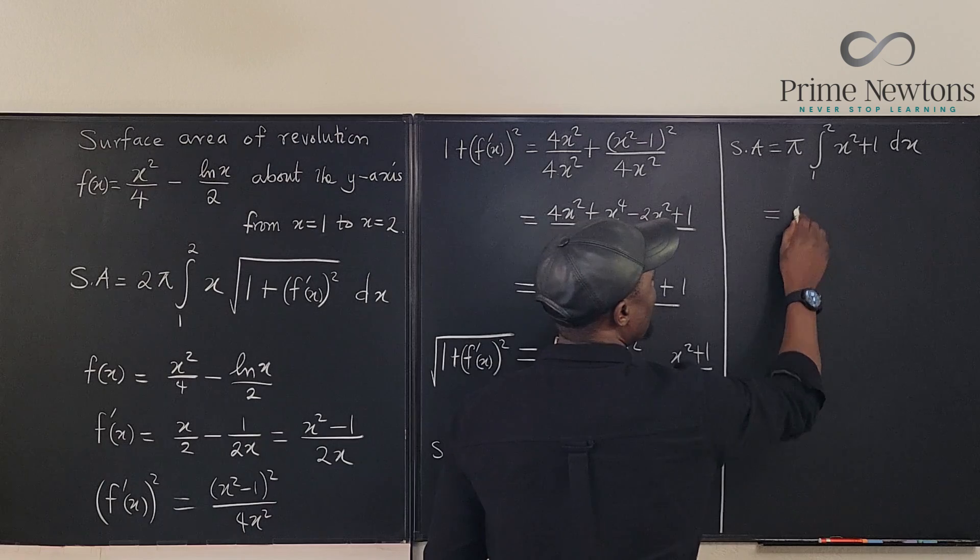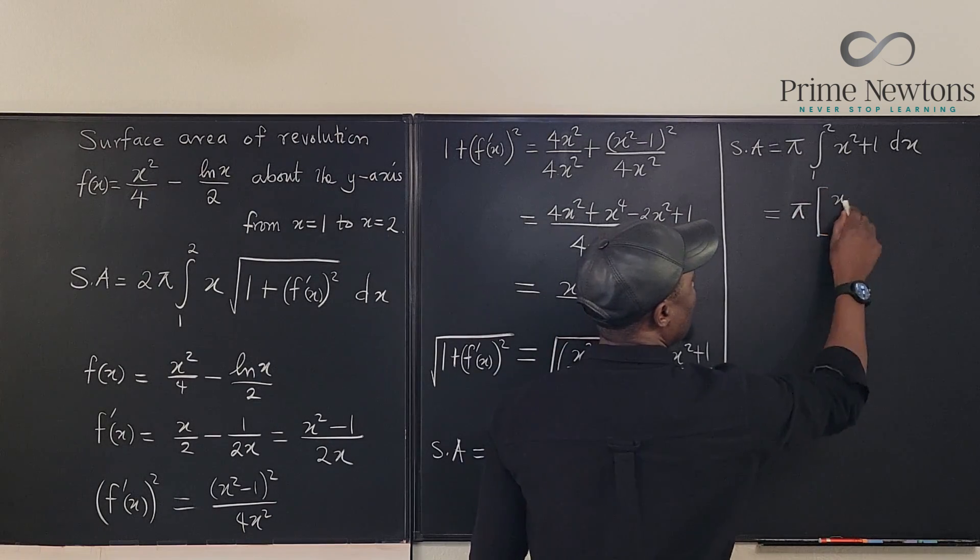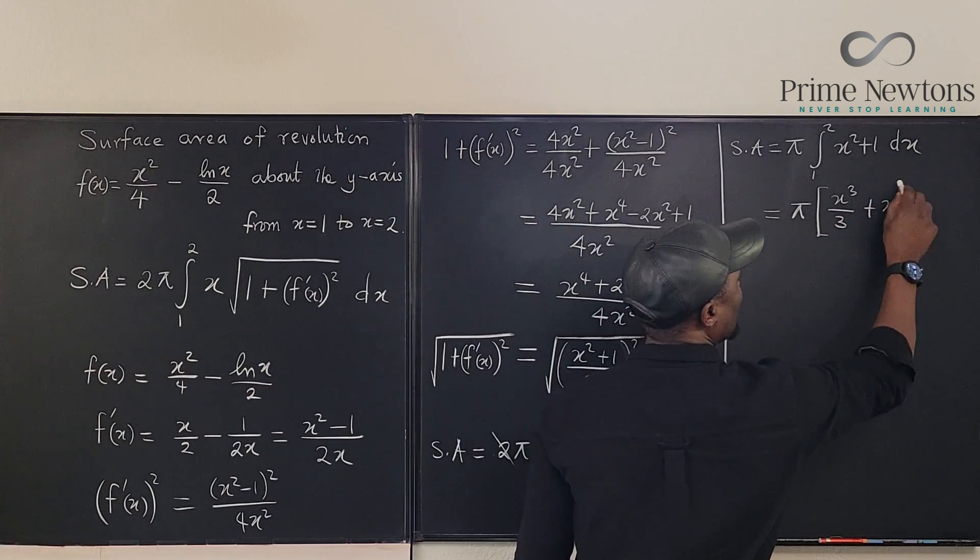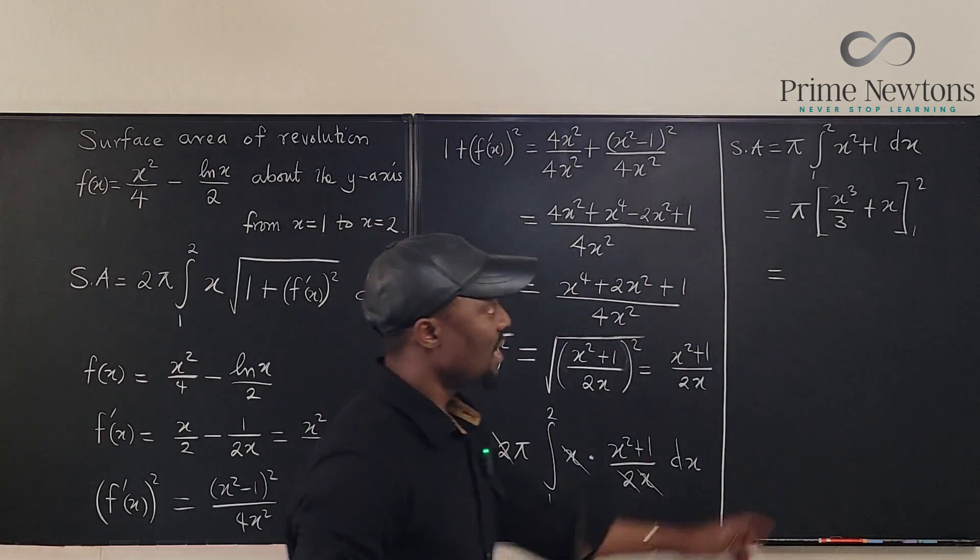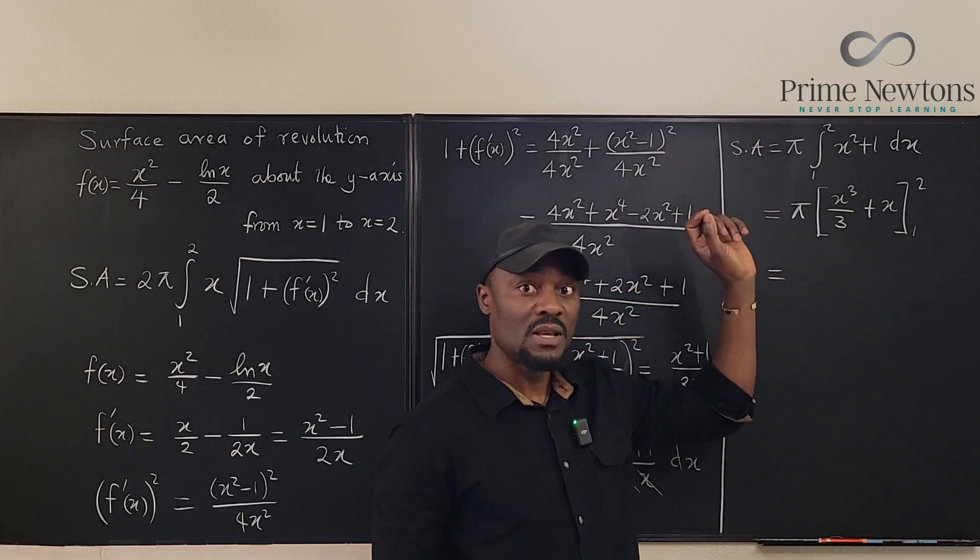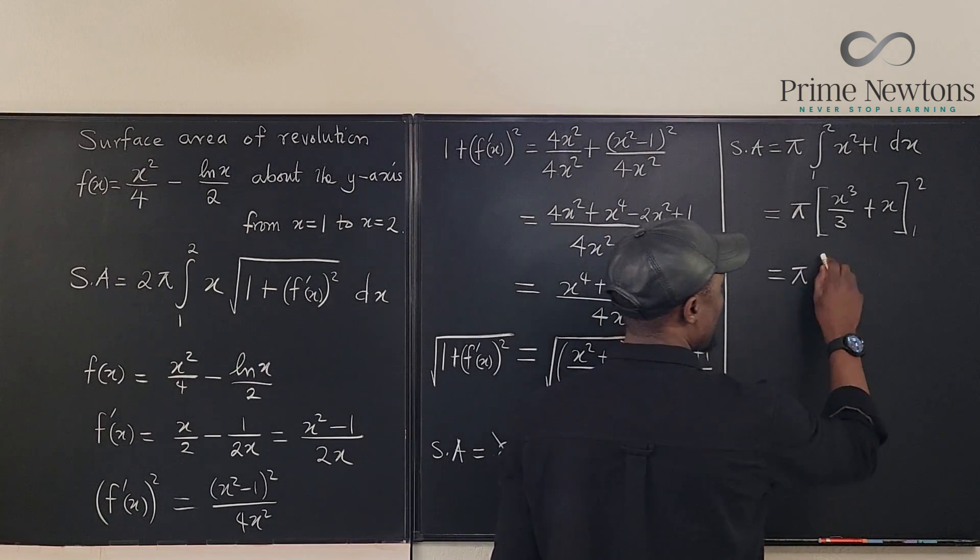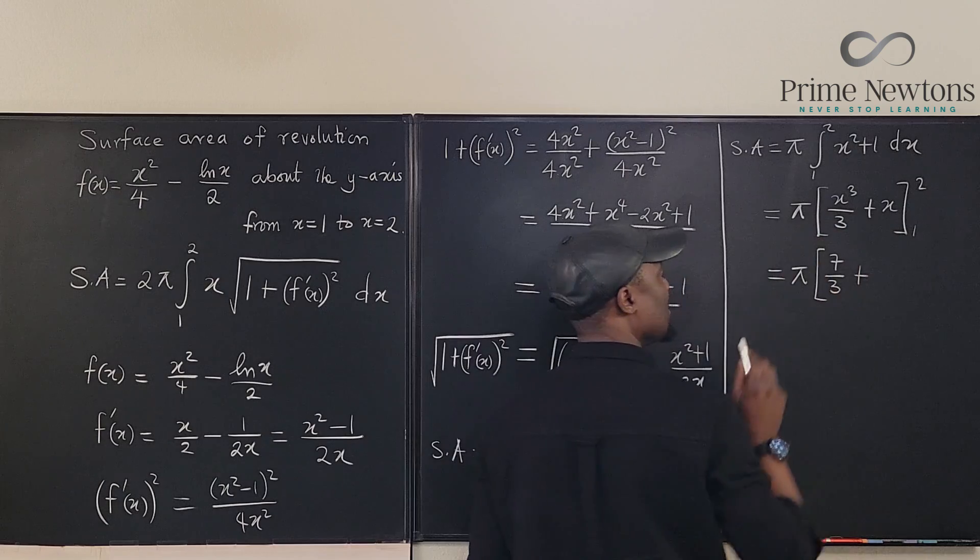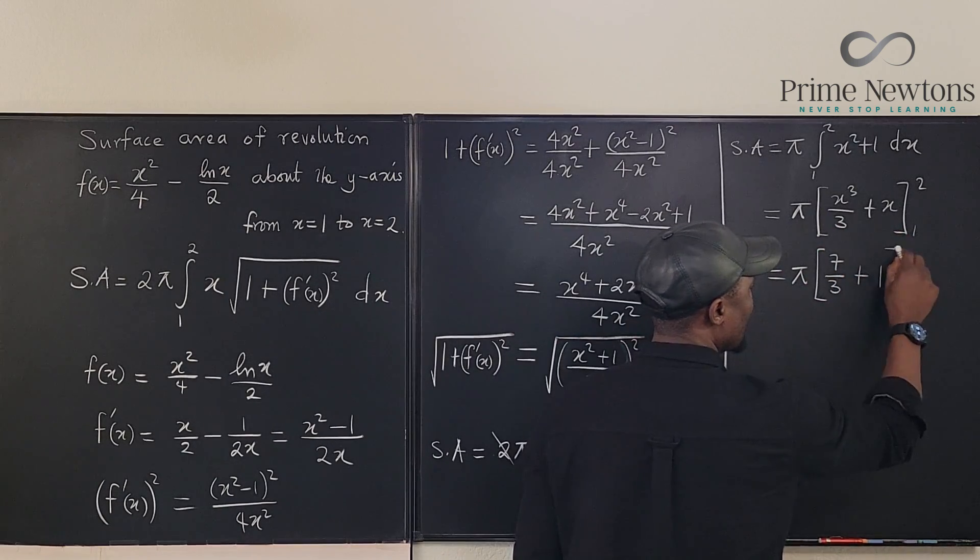Well, this is the same thing as pi times, if we integrate this, this is going to be x cubed over 3 plus x from 1 to 2. This is going to be, if we plug in 2, it's going to be 8, right? If we plug in 1, it's going to be 1. So 8 minus 1 is 7. So this is pi. This is 7 over 3 plus. If you plug in 2, it's going to be 2. Plug in 1, it's 1. So it's 2 minus 1 is 1. That's where we are.